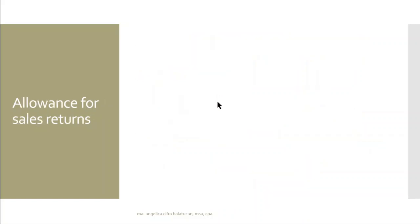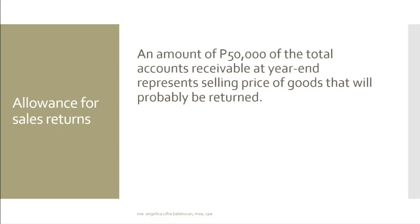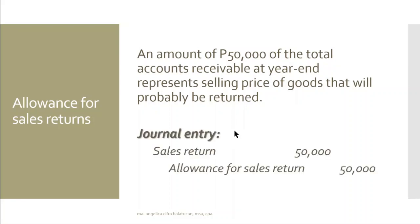Another deduction from gross receivables to get the net realizable value is sales returns — when goods are returned by the customer because they are not happy with what they purchased or it does not meet their needs. For example, 50,000 of total accounts receivable at year-end represents the selling price of goods that will be properly returned. The entry is: debit sales returns and credit allowance for sales returns.